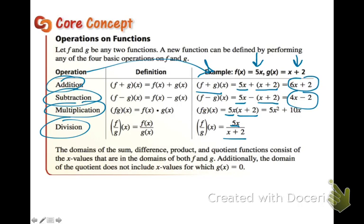We will be finding domain rules for any functions that don't have specific numbers plugged in for x. The domain of a sum, difference, product, and quotient consists of the x values that are in the domains of both original functions. Additionally, when we divide, we have to watch for any x values that would give us a non-real number or undefined result — where we might end up with a 0 in the denominator.